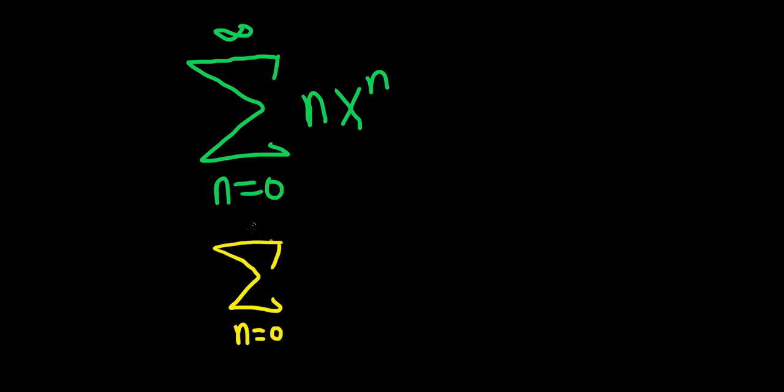Typically, books start at zero, and they have an infinity symbol, and they have a sub n times x minus c to the n. So this is typically how a power series centered at c is defined in most textbooks.